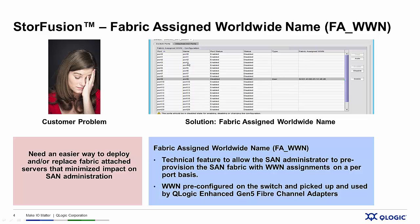Let's start by looking at the customer problem. Sarah is the manager of a small SAN administration team that's been tasked with adding a new storage area network as part of a data center expansion project. Her team is on top of things and have all the storage devices, the Brocade Gen5 16GB fiber channel switching in place, they have the cables, all their SFPs — they're ready to go. However, the servers with the fiber channel adapters installed in them have not yet arrived.